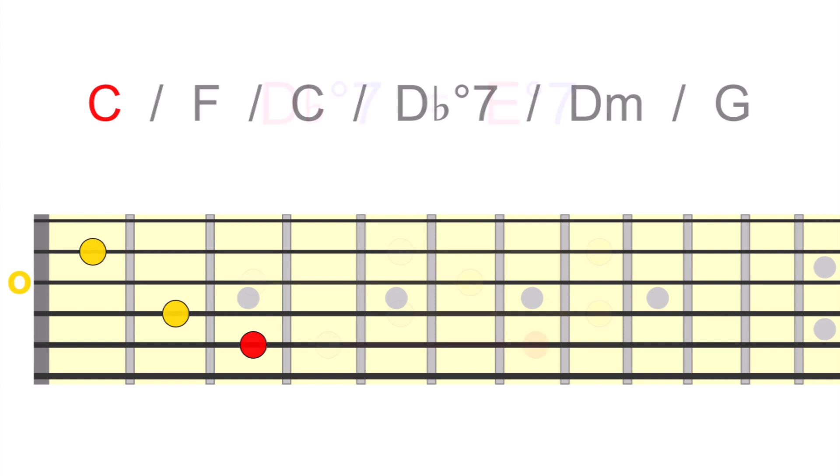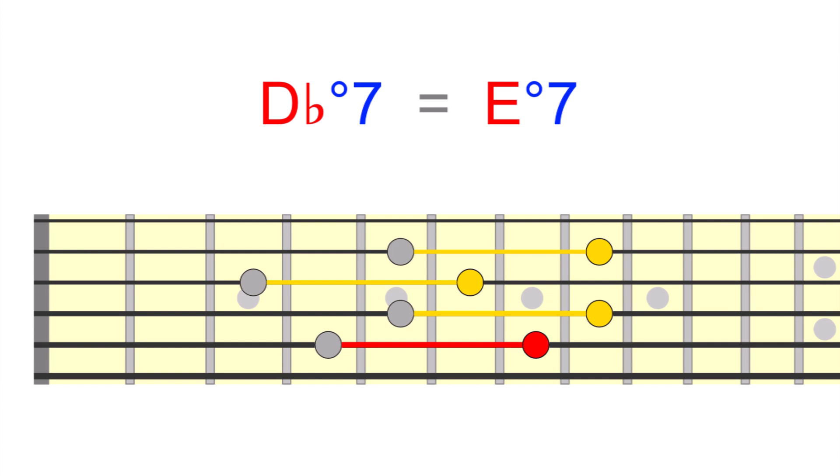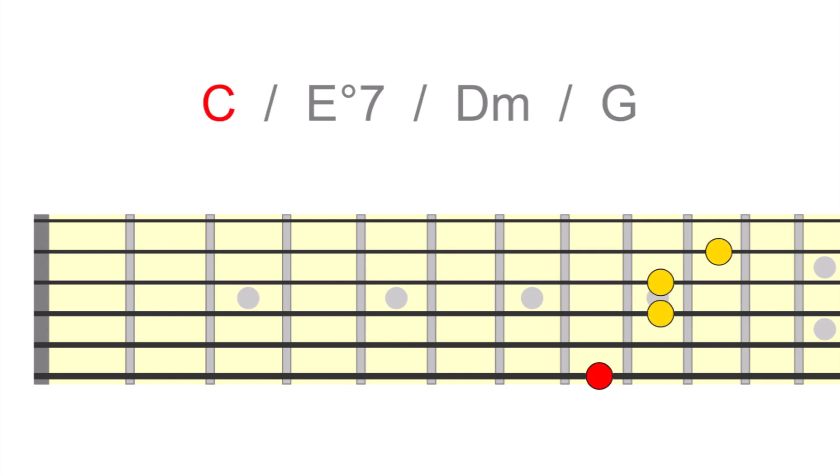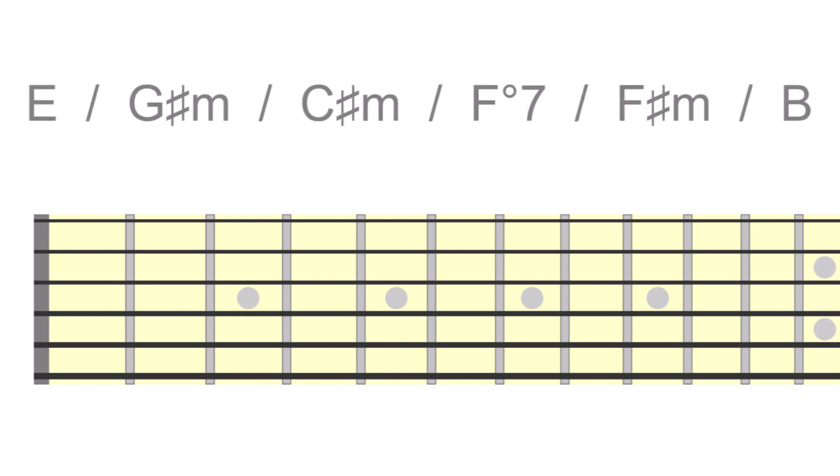Let's hear this movement within a larger progression. Using the minor 3rd symmetry concept from earlier, we could also play E diminished 7 before D minor, to get a similar effect. Another example in E major.